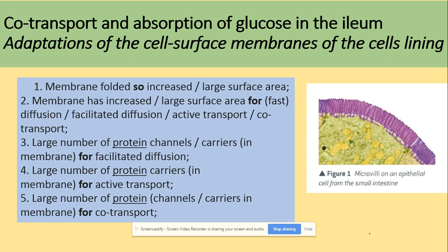Now for co-transport, probably the most challenging transport in this specification. First, let's look at the adaptations of the cell surface membrane of the cell lining. The membrane is folded to increase the surface area, providing a large surface area for diffusion, active transport, and co-transport. There are large numbers of protein channels for facilitated diffusion, carrier proteins for active transport, channel and carrier proteins for facilitated diffusion, and proteins for co-transport.